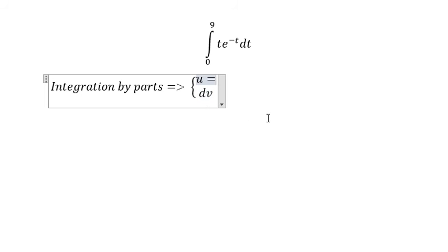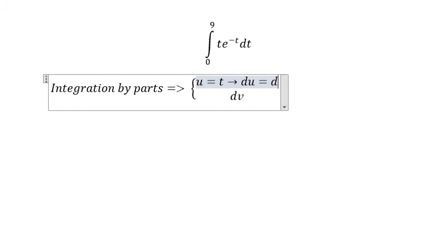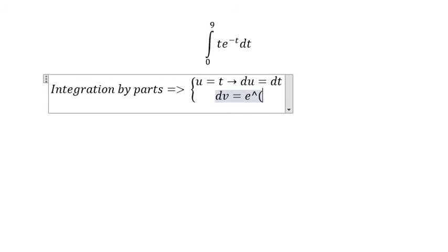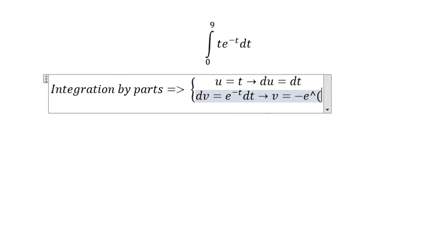u equals t, so du equals dt. dv is e to the power of minus t dt, so v equals minus e to the power of minus t.